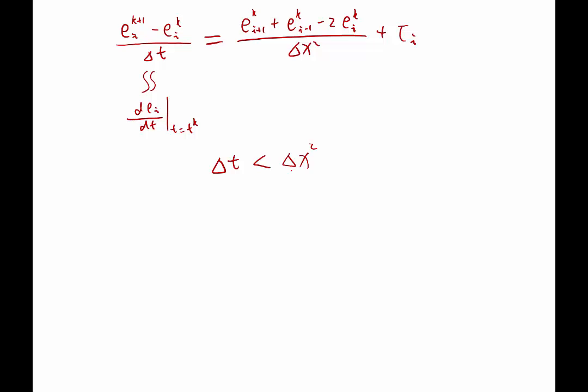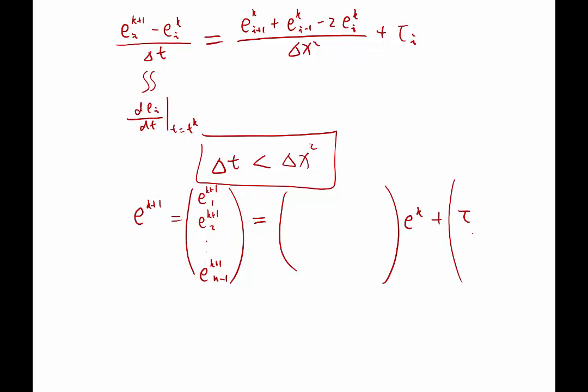Otherwise, I'm going to derive a matrix equation. I'm going to say E to the k plus 1, I'm going to define it as E^(k+1)_1, E^(k+1)_2, etc., E^(k+1)_(N-1). This is going to be a matrix times E to the k. E to the k is the same vector at k, plus this vector tau, which is also tau_1, tau_i, tau_(N-1), also at time step k.